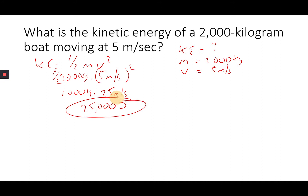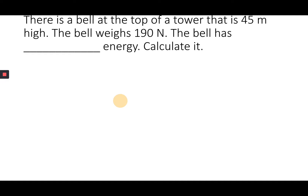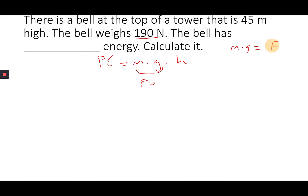A bell at the top of a tower 45 meters high weighs 190 newtons. Remember, a newton is a force — mass times gravity combined — what we call weight. Potential energy equals force times height: 190 newtons times 45 meters equals 8,550 joules.